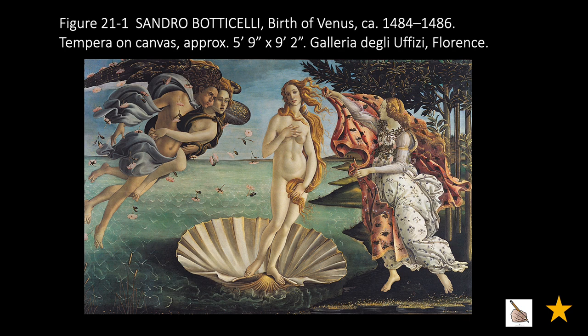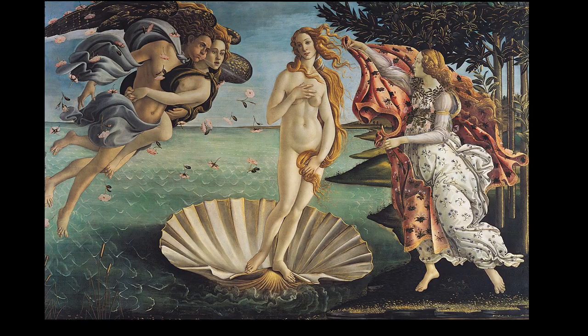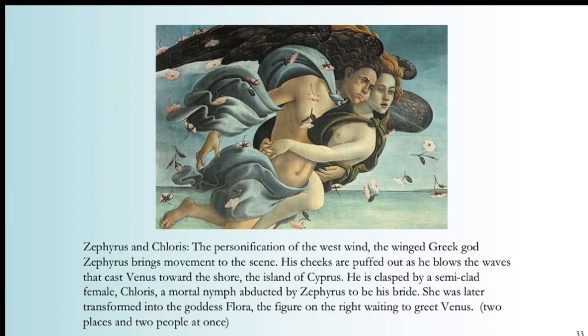Next, we have Botticelli's Birth of Venus. Zephyrus and Chlorus — the personification of the west wind, the winged Greek god — Zephyrus brings movement to the scene. His cheeks are puffed out as he blows the waves that cast Venus towards the shore, the island of Cyprus. He is clasped by a semi-clad female, Chlorus, a mortal nymph abducted by Zephyrus to be his bride. She was later transformed into the goddess Flora — the figure on the right, waiting to greet Venus. Two places and two people at once.